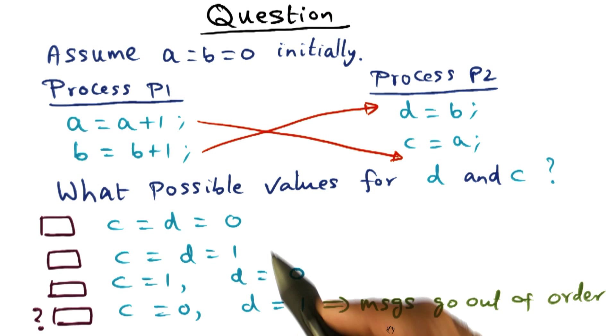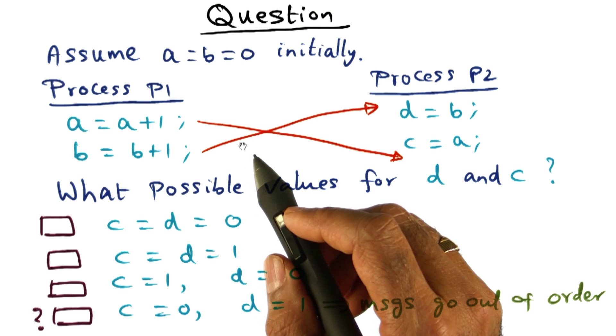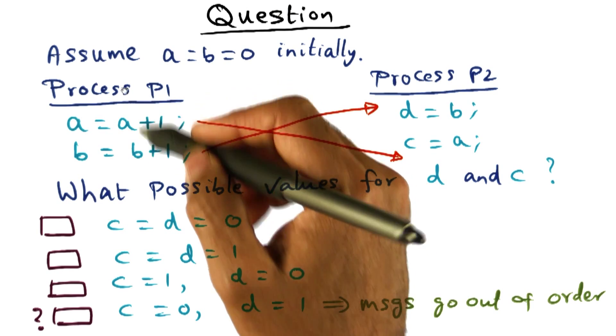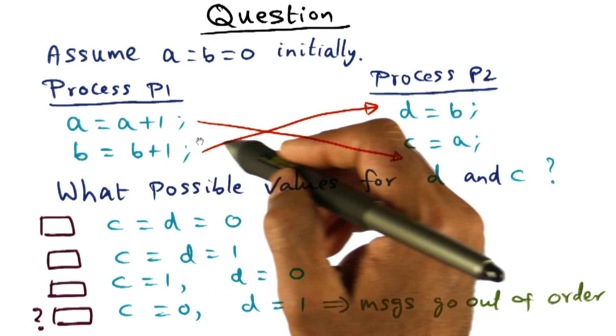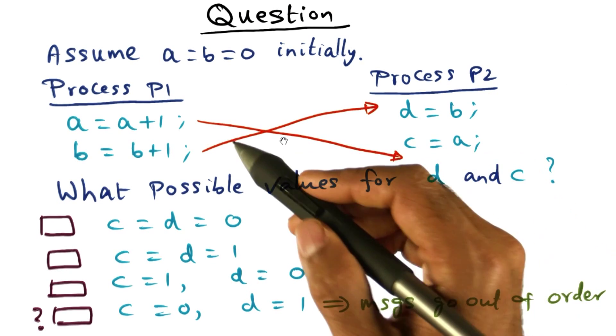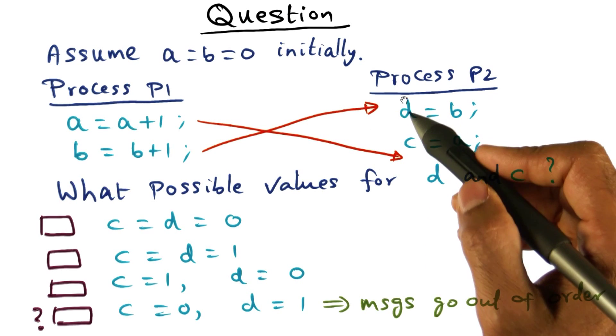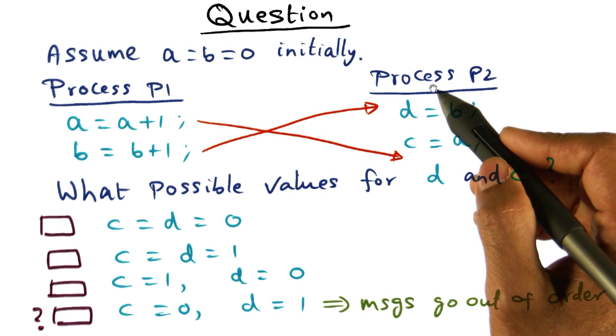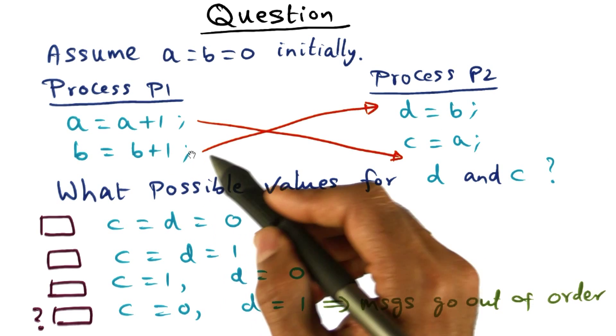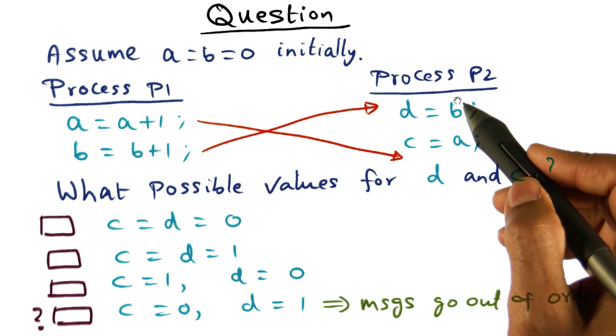You have to remember that if you recall the picture of the shared memory machine, you've got an interconnection network that is connecting all these processes. And a write that happens on this processor has to go through the interconnection network and get to this other processor. Now it is conceivable that if messages go out of order, it is possible that when this process executes this statement, this new value of B has arrived. The message that contains a new value of B has arrived.